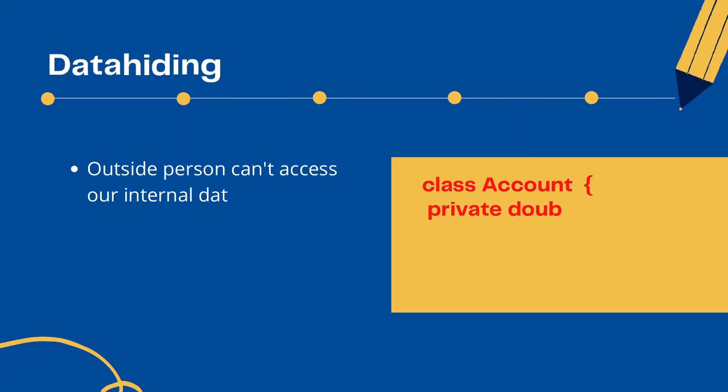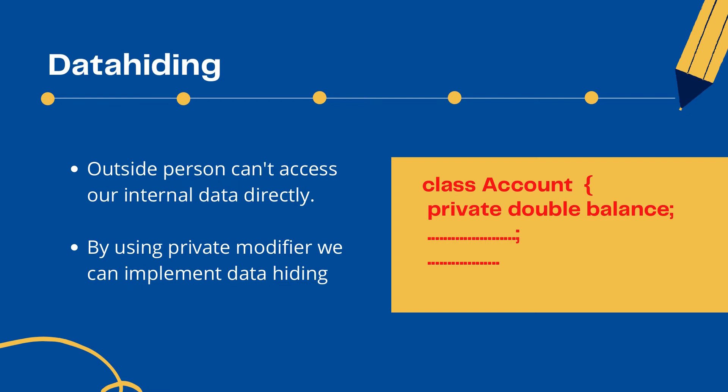Now let's cover what is data hiding. In the interview, you don't need to explain data hiding unless the interviewer specifically asks. Data hiding means hiding data from outside — an outside person can't access our internal data directly. That is called data hiding. By using the private modifier you can implement data hiding. So here you can see I have declared a variable that is private — this is how you achieve data hiding.